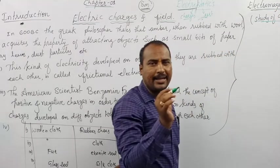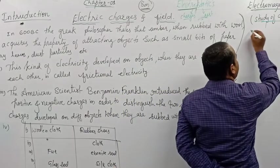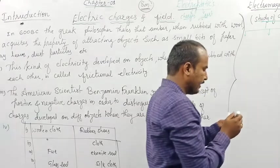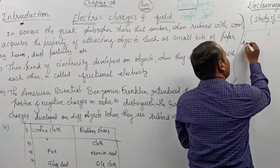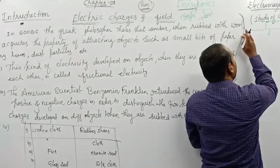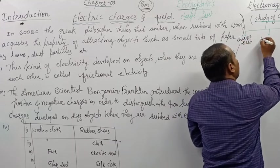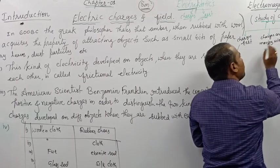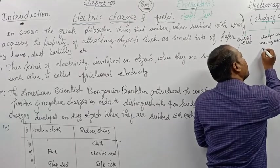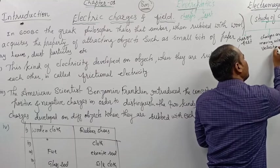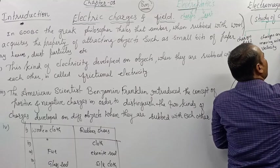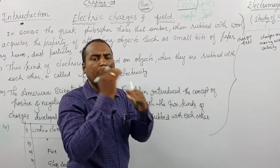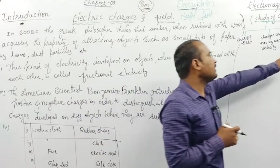The study of charge is called electromagnetism. Within that, if your charges are at rest, we study electrostatics. If charges are moving with certain velocity, that's another area. And if charges are accelerated — meaning they keep on changing velocity with respect to time — we call them accelerated charge particles.